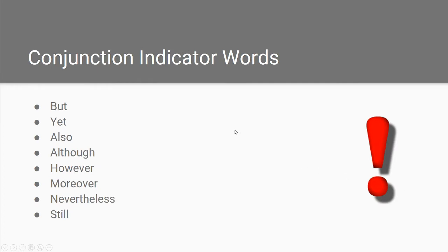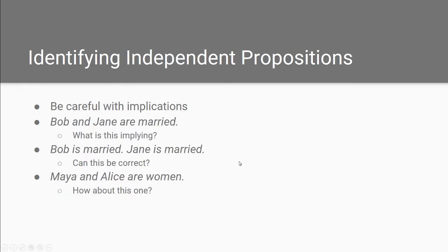You need to watch for some indicator words — we've talked about this in the past. You've seen the word 'and,' but you also want to look out for other words such as these. Again, this is going to take some practice.